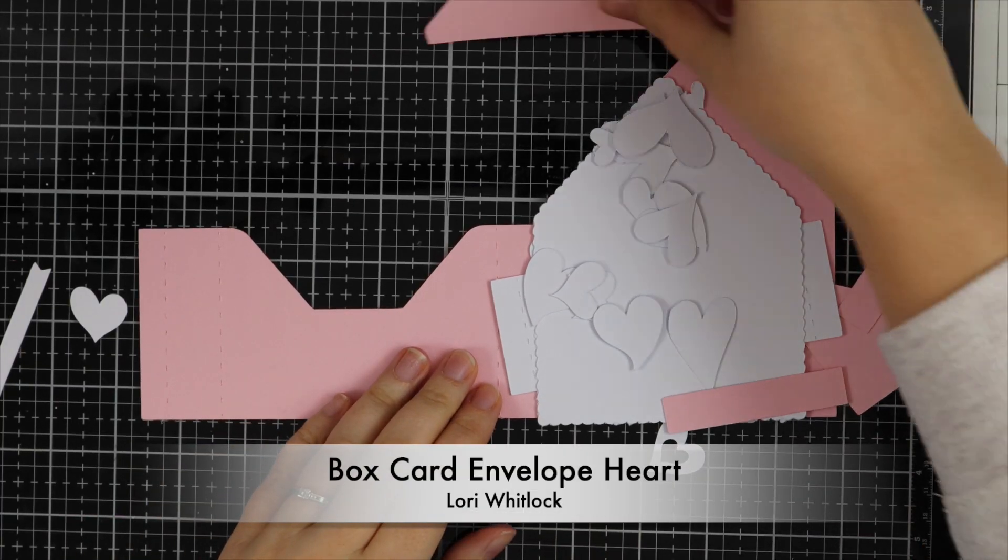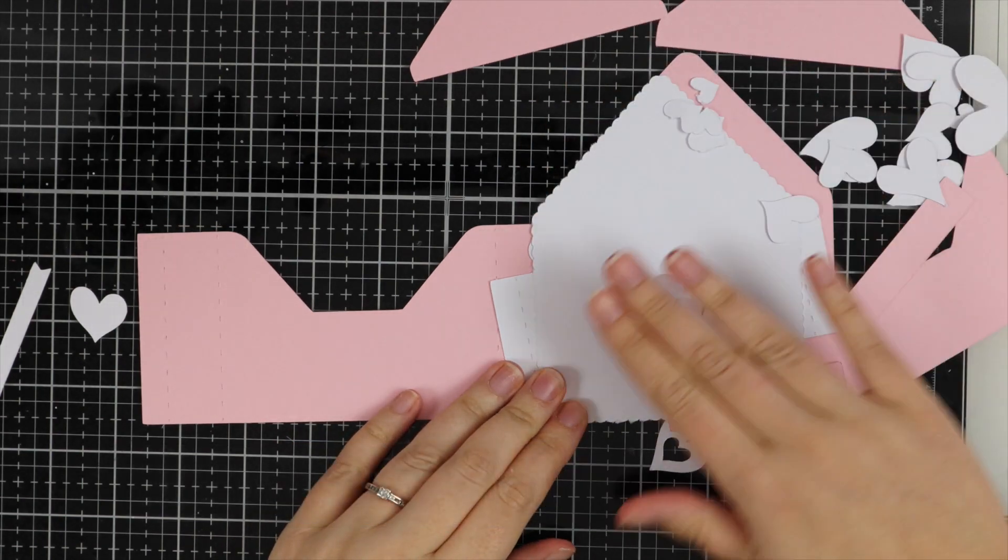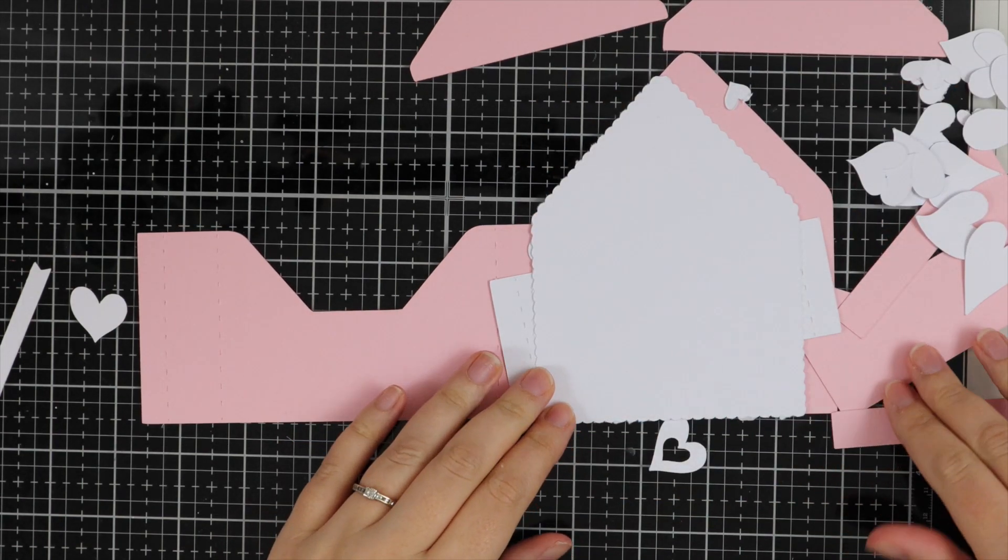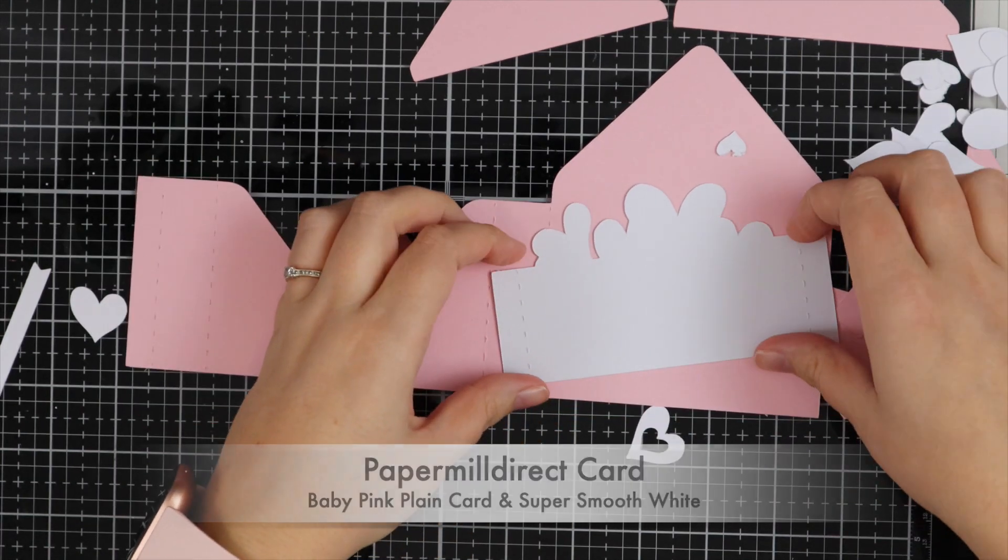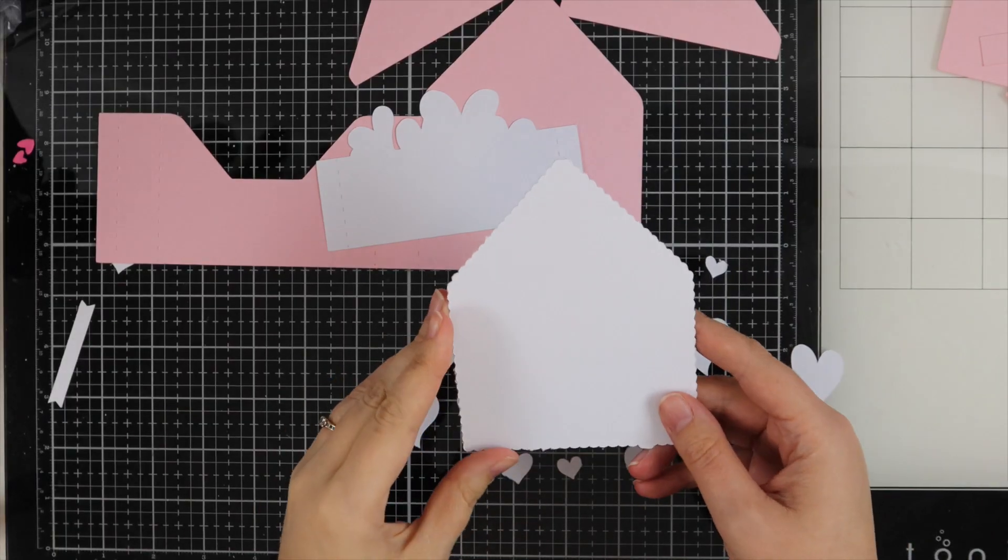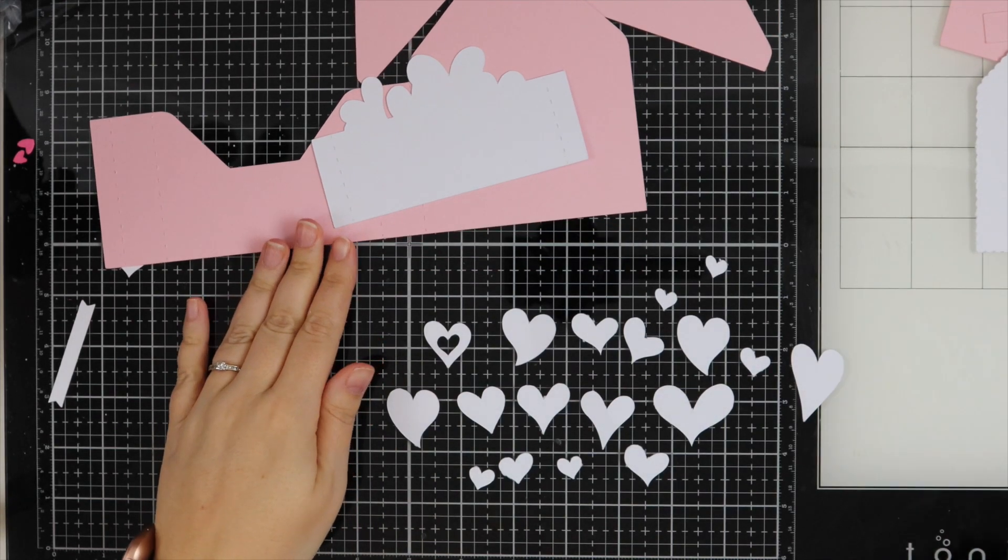Hi, it's Vic. Welcome back to my channel. Today I'm sharing with you this box card envelope heart. To start with, I've used my Silhouette machine and I've gone ahead and cut out this Lori Whitlock file.